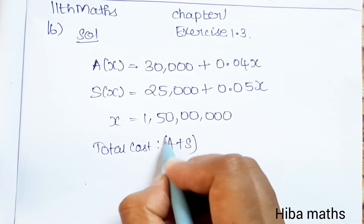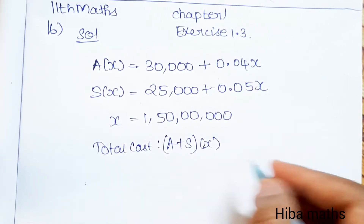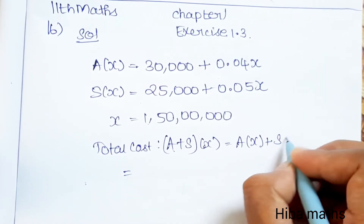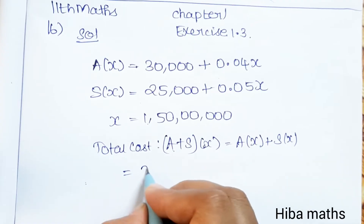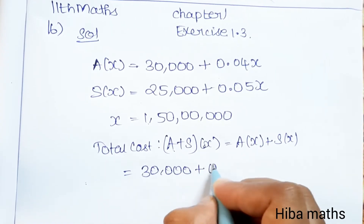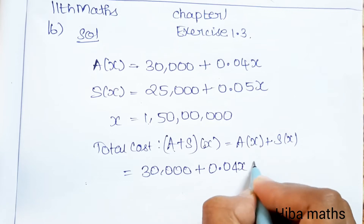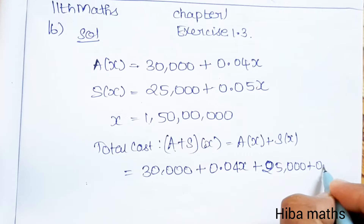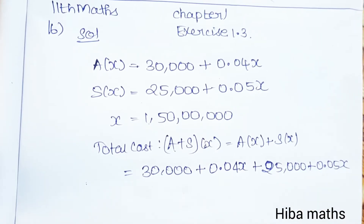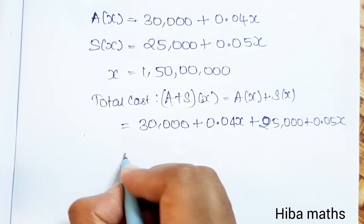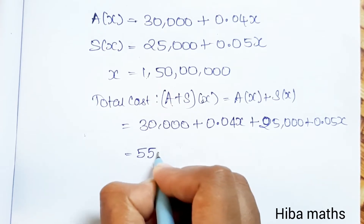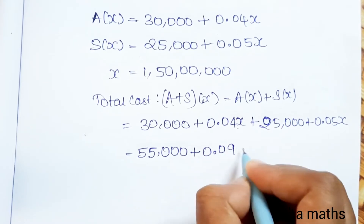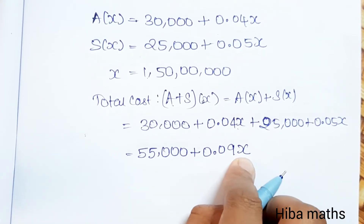To find the total family income, we compute A plus S of x, which equals A(x) plus S(x). Adding these two functions: 30,000 + 0.04x + 25,000 + 0.05x. Combining like terms, we get 55,000 + 0.09x.